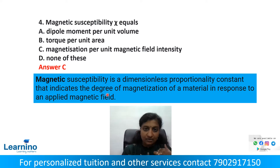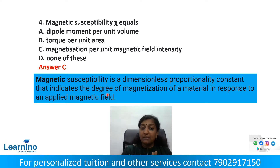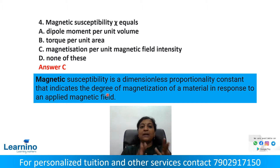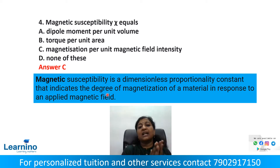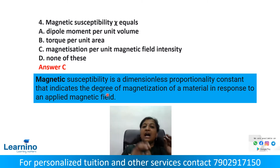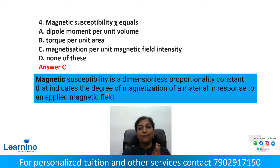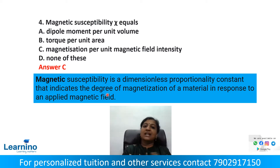We call it susceptibility. Compare with permeance, reluctance, permeability, and retentivity — these are different magnetic quantities. This is a basic question from the Tradesman Electrical Exam. Definitions and units are very important to study.